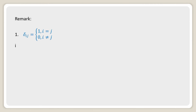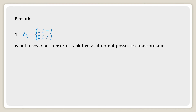Remark 1: delta_ij (lower suffix) is equal to 1 when i equals j, and 0 when i is not equal to j. This is also sometimes used as Kronecker delta, but this is not a covariant tensor of rank 2, as it does not possess the transformation law of a covariant tensor.